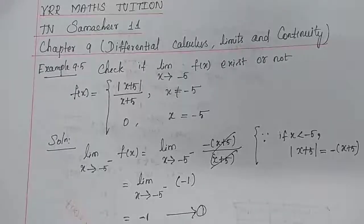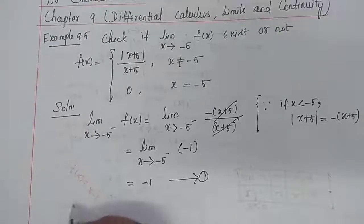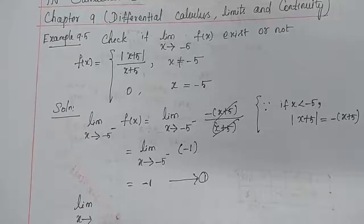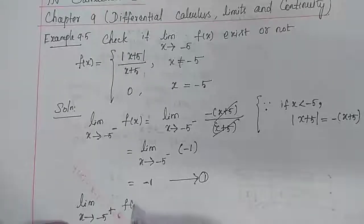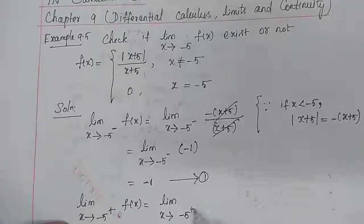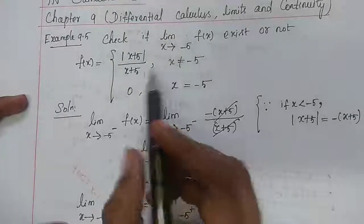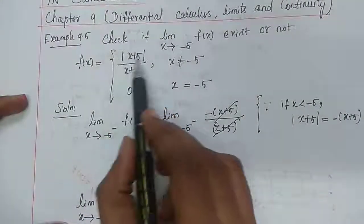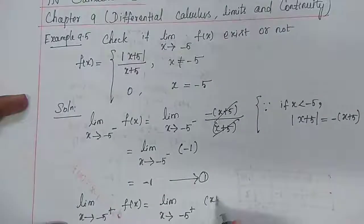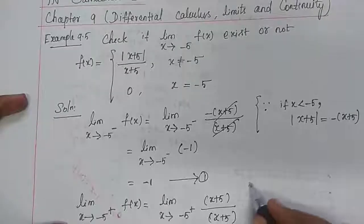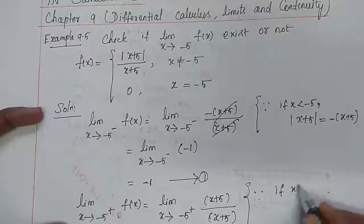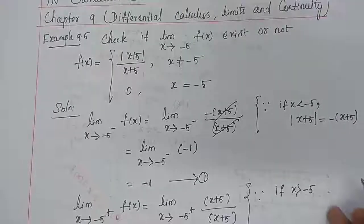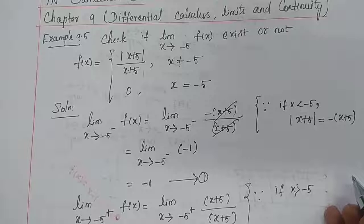Now do the right limit. Right limit = lim (x→−5⁺) f(x). For the right limit, since x is greater than minus 5, modulus of x+5 is simply x+5. So f(x) = (x+5)/(x+5).